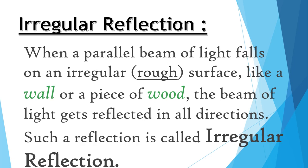After learning about regular reflection, let's look at irregular reflection. When a parallel beam of light falls on an irregular, rough surface like a wall or a piece of wood, the beam of light gets reflected in all directions. Such a reflection is called irregular reflection.